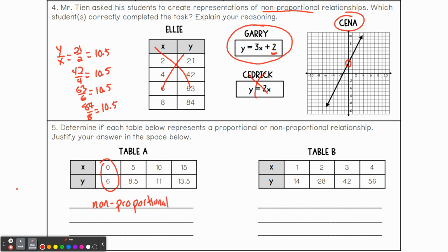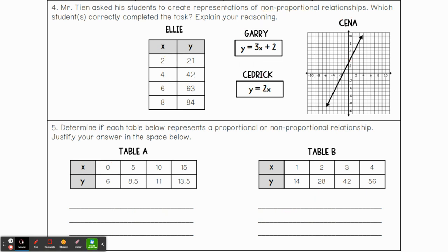And then looking at table B, you notice there is a pattern. We're going up by 14s. So since we're going up by 14s, this one is proportional because if I go down to zero, Y is going to be zero. All right. That, I believe that does it for today. I'll see you guys next time.